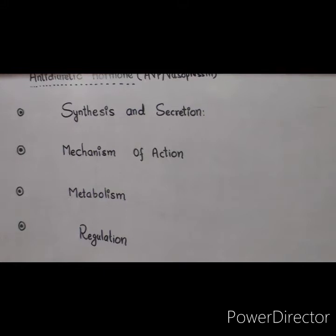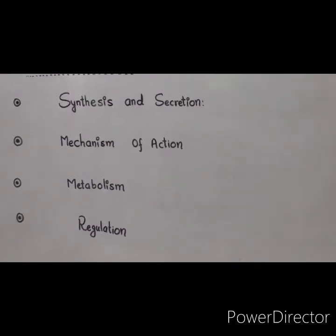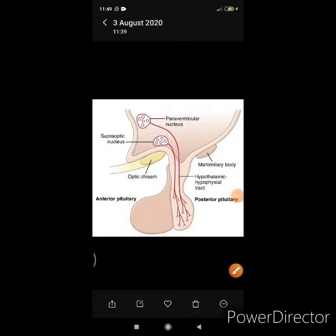This figure shows the hypothalamus and its two nuclei: supraoptic nucleus and paraventricular nucleus. The pituitary gland with anterior pituitary and posterior pituitary are shown, and a stalk connecting the hypothalamus and posterior pituitary gland can be seen.